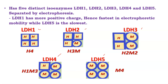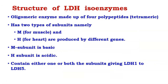The five LDH isoenzymes differ in physical and chemical properties and can be separated by electrophoresis. LDH1 is more positively charged (acidic in nature) and moves fastest toward the negative electrode. LDH5 is more basic with less positive charge and moves slowest. The electrophoretic mobility decreases from LDH1 through LDH5.